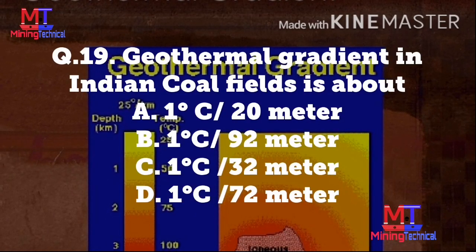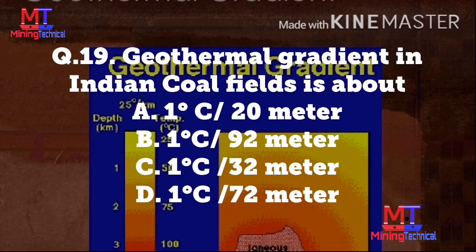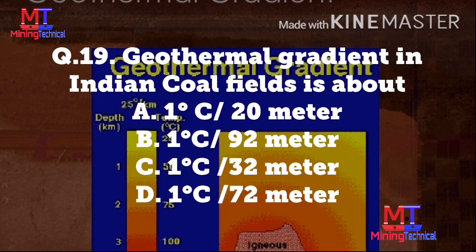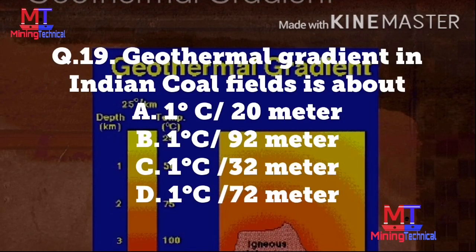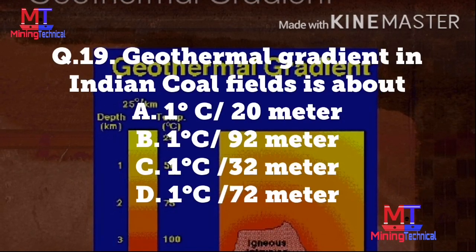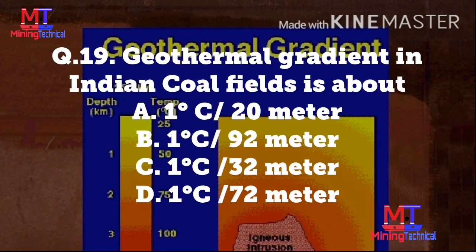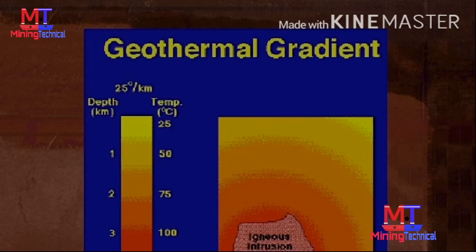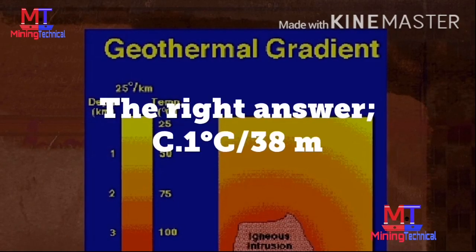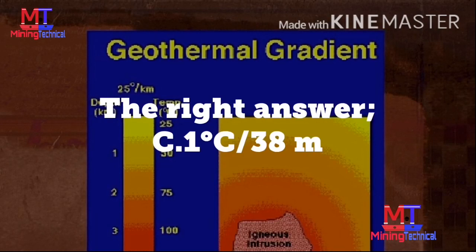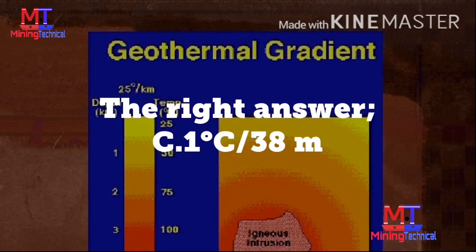Question number 19: The geothermal gradient of Indian coalfields is approximately — Option C: 1°C for every 38 meter. Bharatiya coal field ka geothermal gradient lagbhag kitna hota hai — the right answer is Option C: 1°C for every 38 meter, meaning for every 38 meters depth, temperature increases by 1°C.